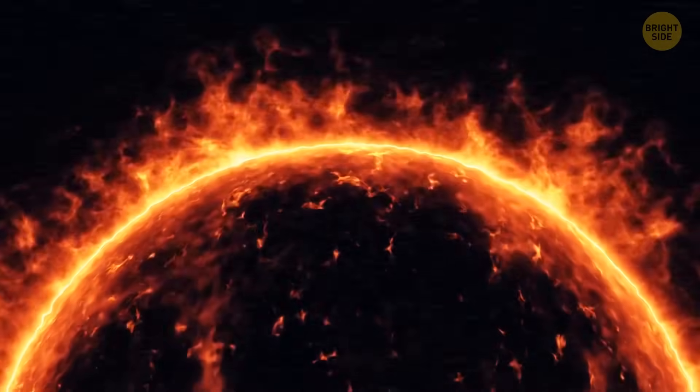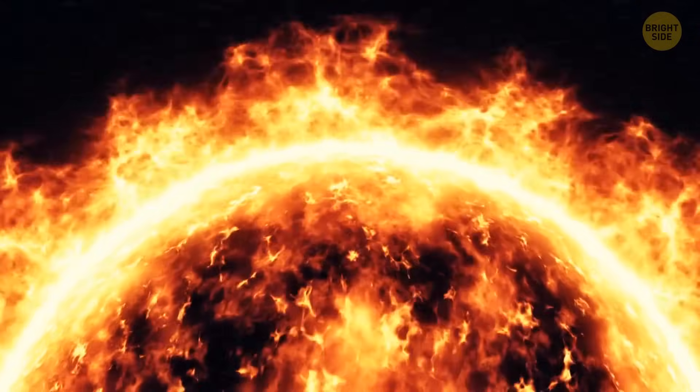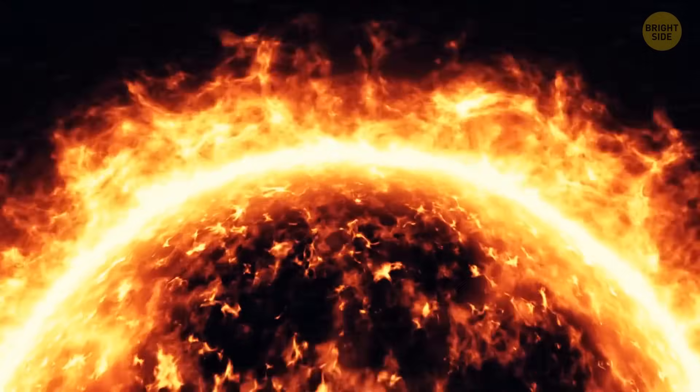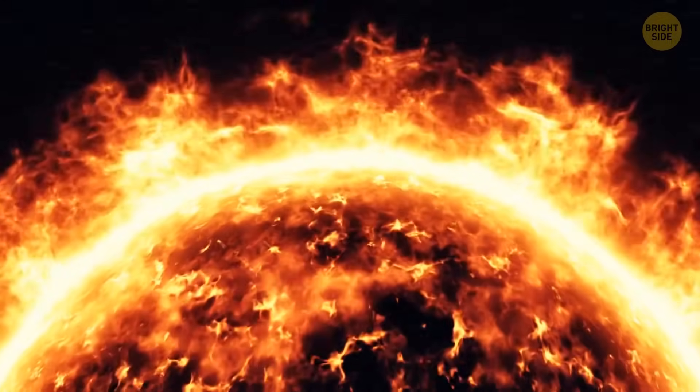Moreover, a thinner atmosphere means less protection from the sun's radiation and solar winds. So corners and edges would be extremely dangerous for humans.